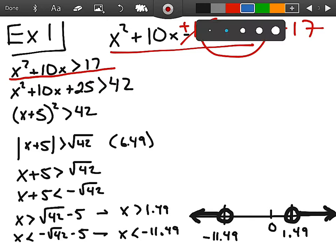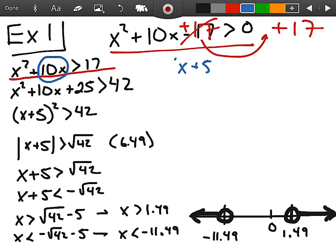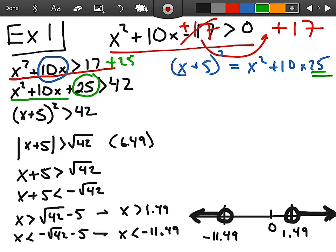Now I'm going to key on the blue here and recall that if I take the binomial and square it, I get x squared plus 10x plus 25. And because I recall the 25 now, I have to add 25 to both sides of this equation and I get x squared plus 10x plus 25 is greater than 42.